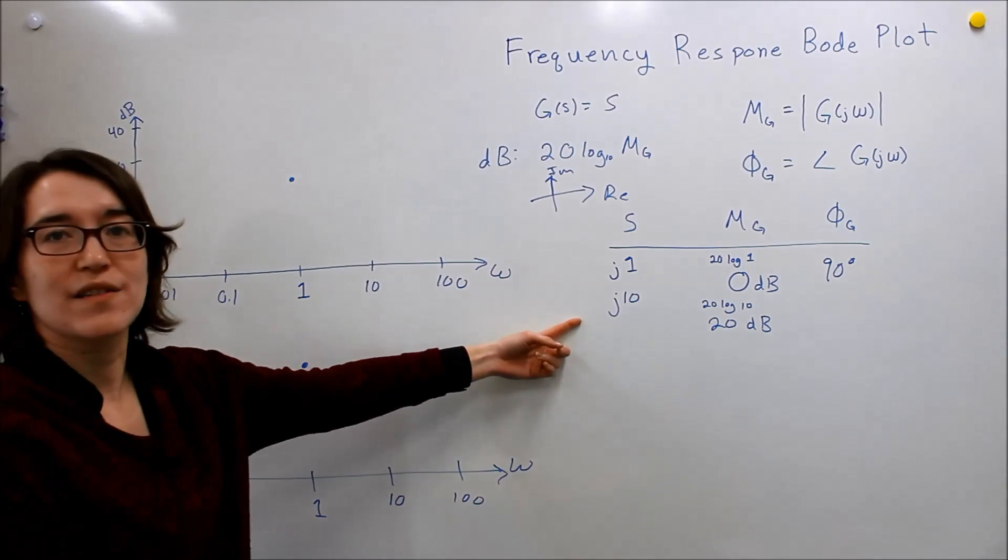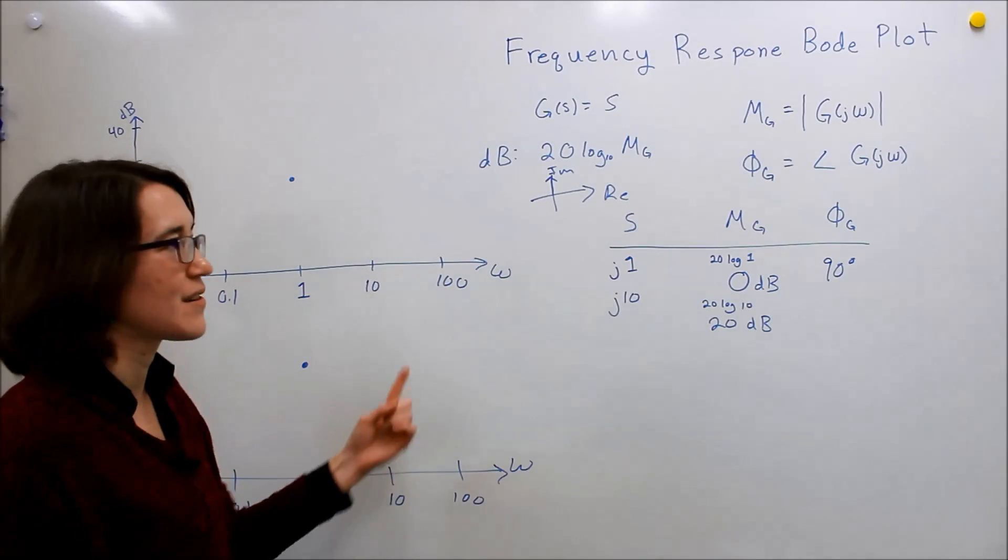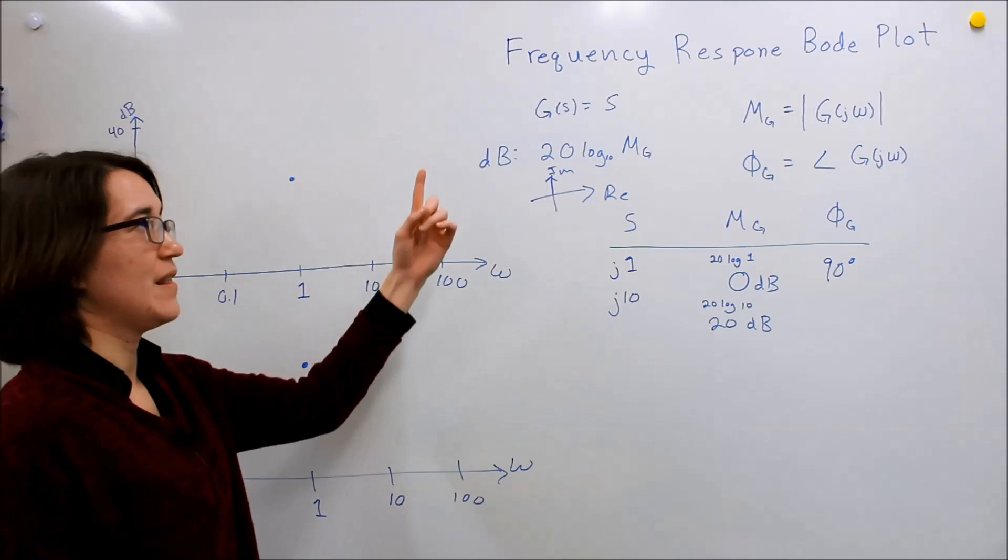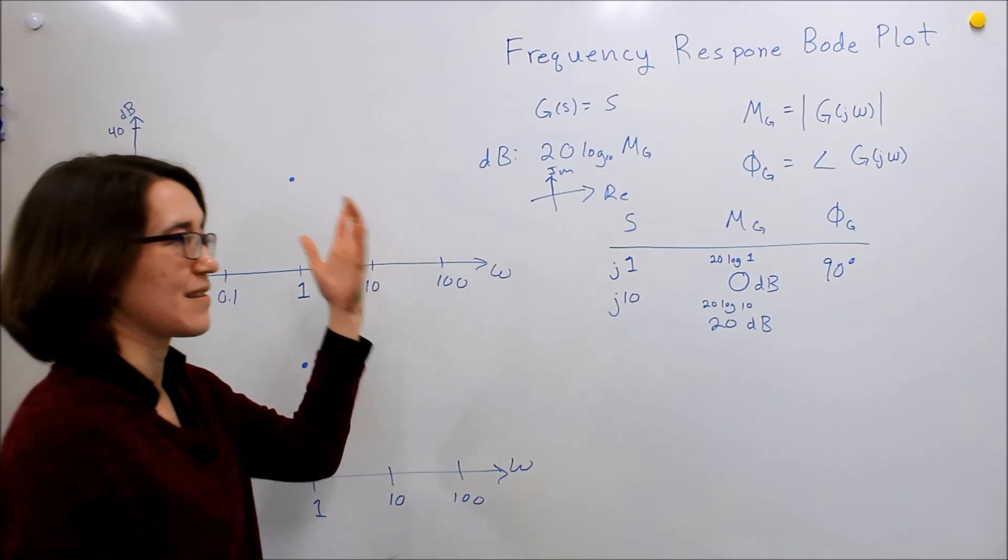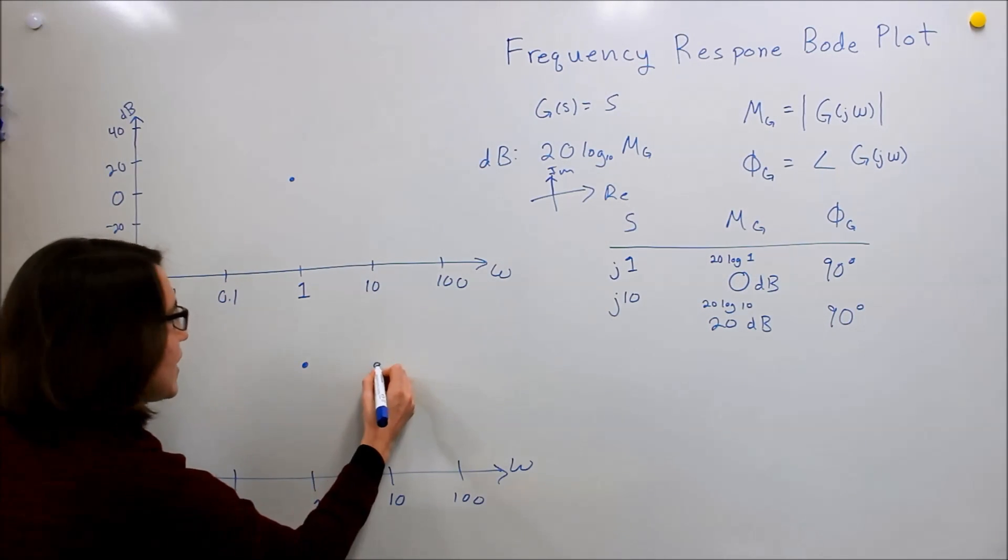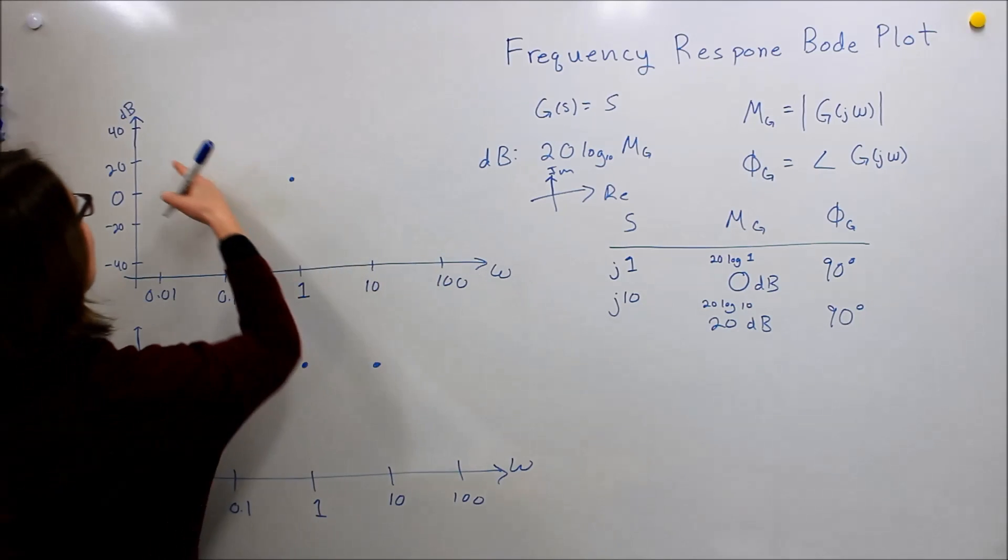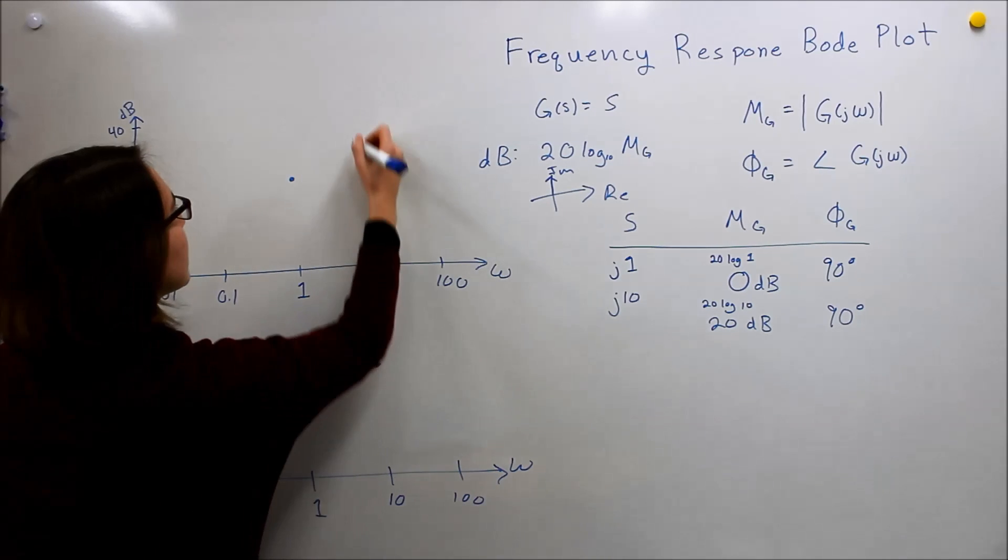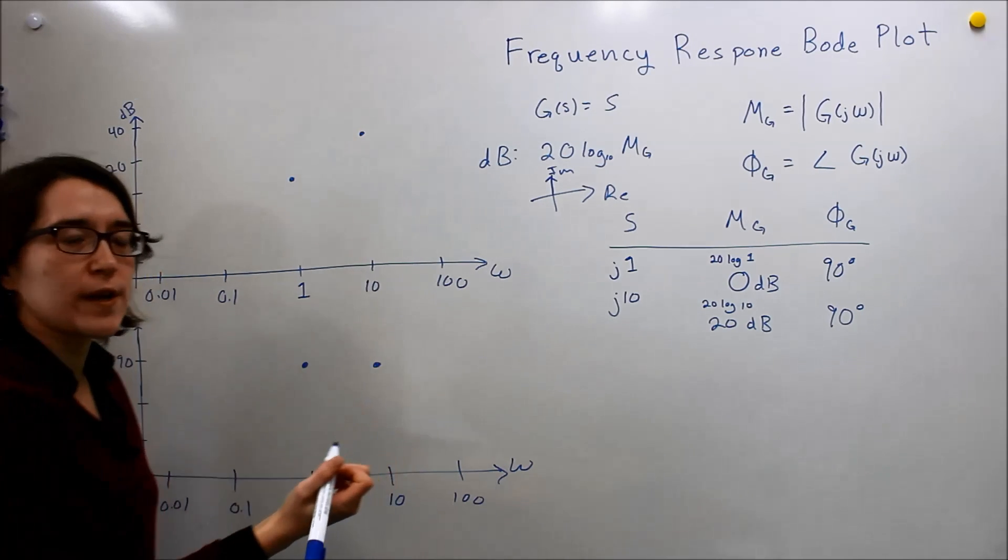If we look at the angle, it's pointing in the same exact direction - just positive in the imaginary axis, so that's 90. We can plot this point: 90 here, and 20 dB is approximately here. We have another point.